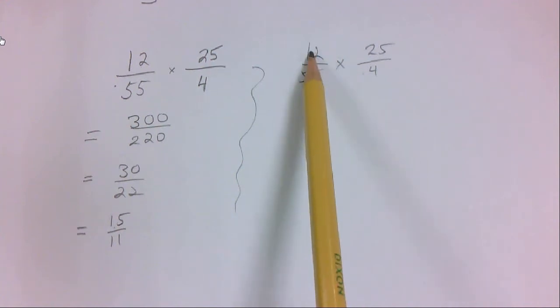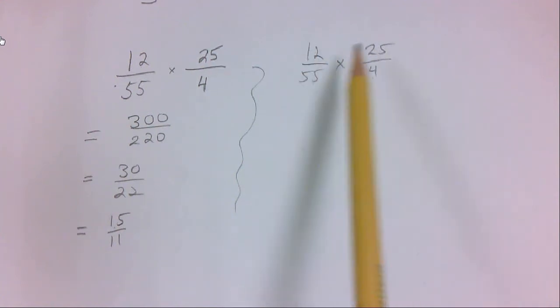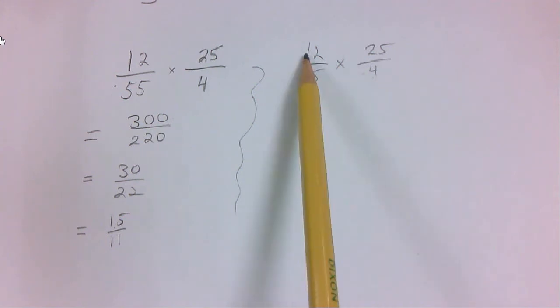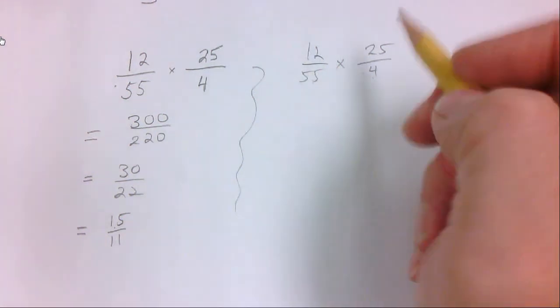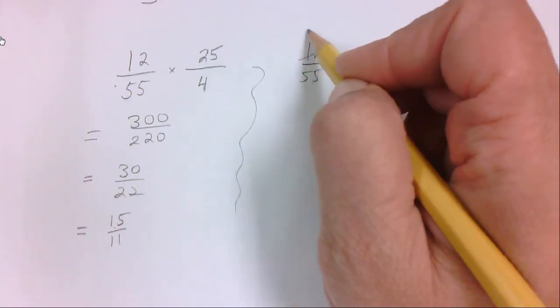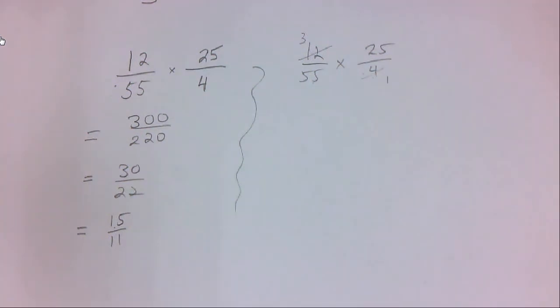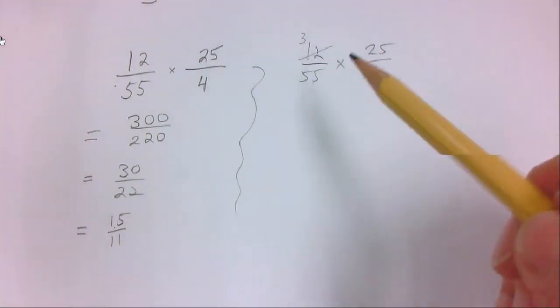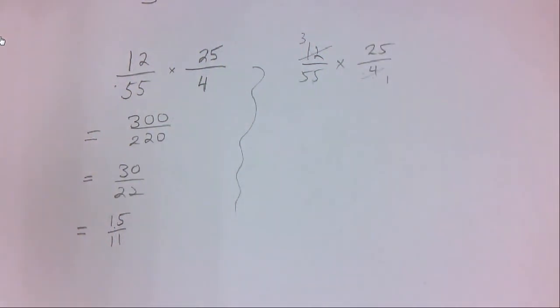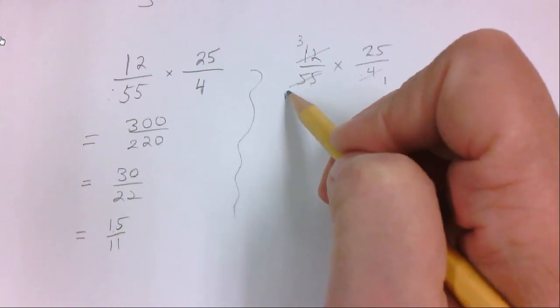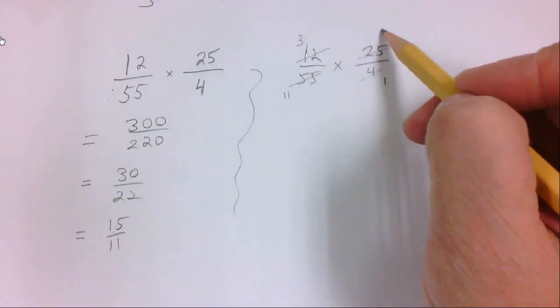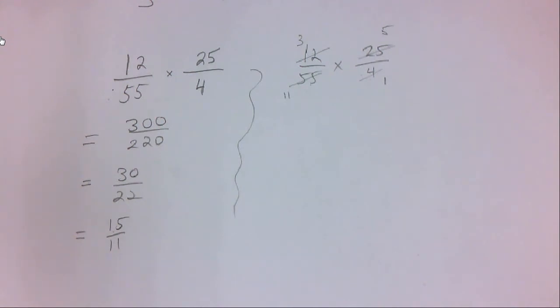So we can try to reduce this way, and it won't reduce, but we can also reduce this way, which means the 12 and the 4, there is a number that divides evenly into both, and that is 4. So I can divide the 12 by 4, that leaves me with a 3. I can divide the 4 by 4, that leaves me with 1. Do it again with 25 and 55. Is there a number that divides evenly into both? And the answer is sure, 5. So I'll take 55 and divide it by 5, I get 11. And 25 divided by 5, I get 5. So I have actually already reduced it.